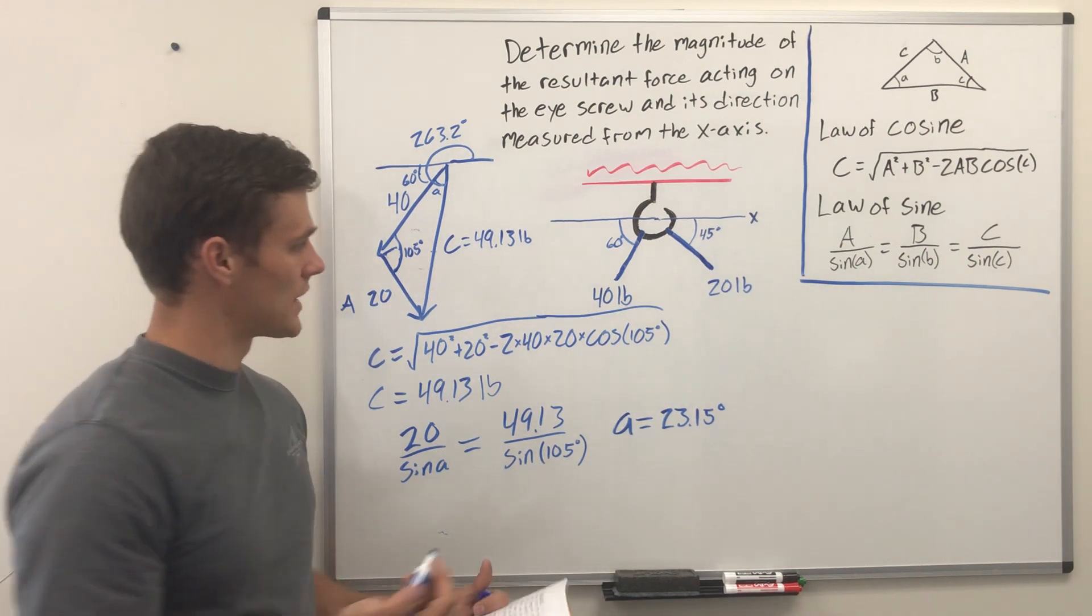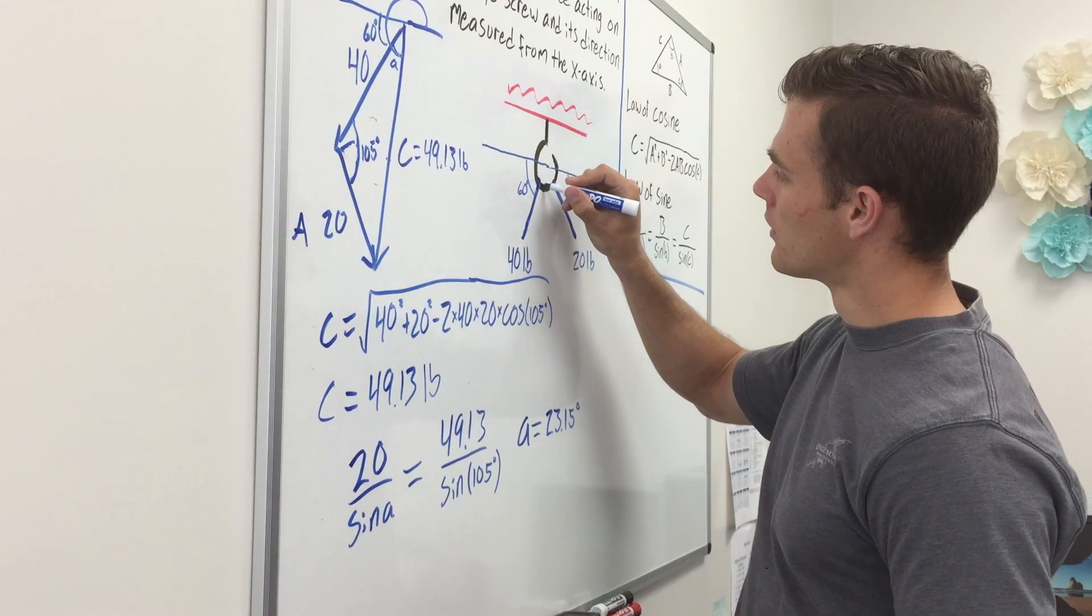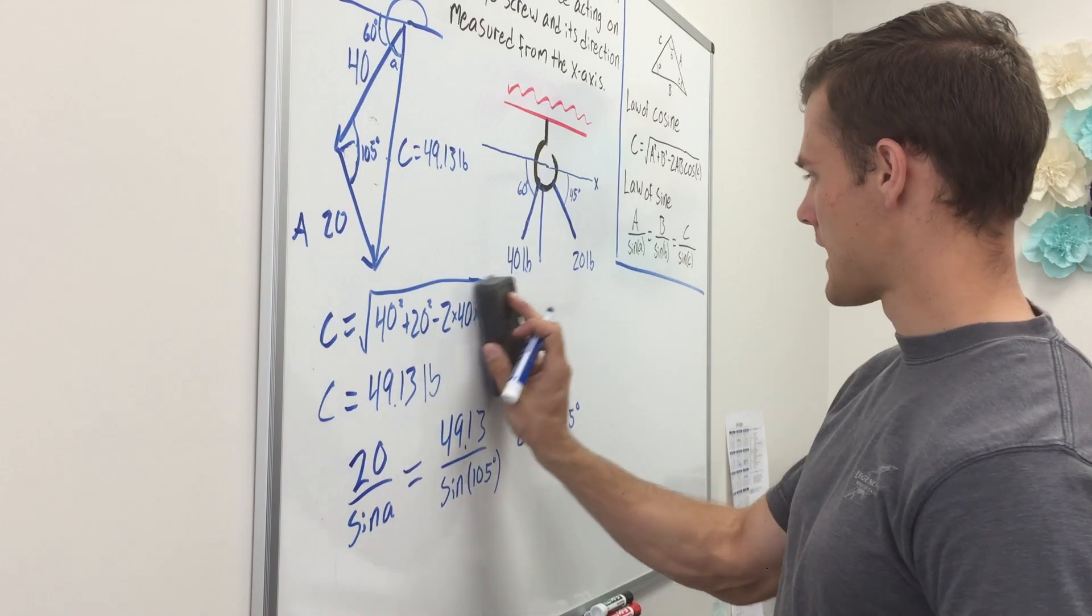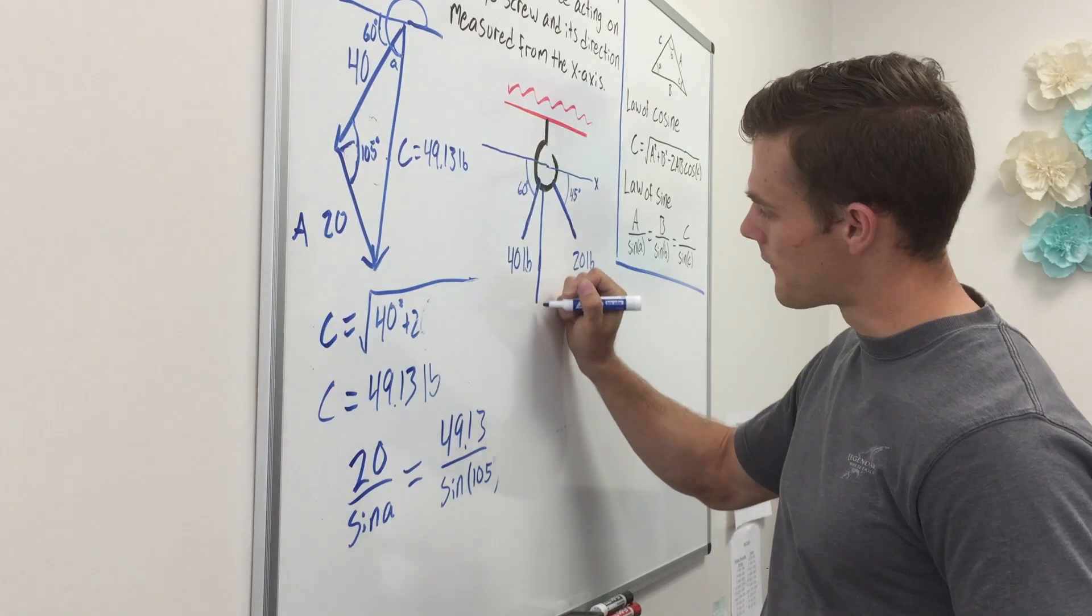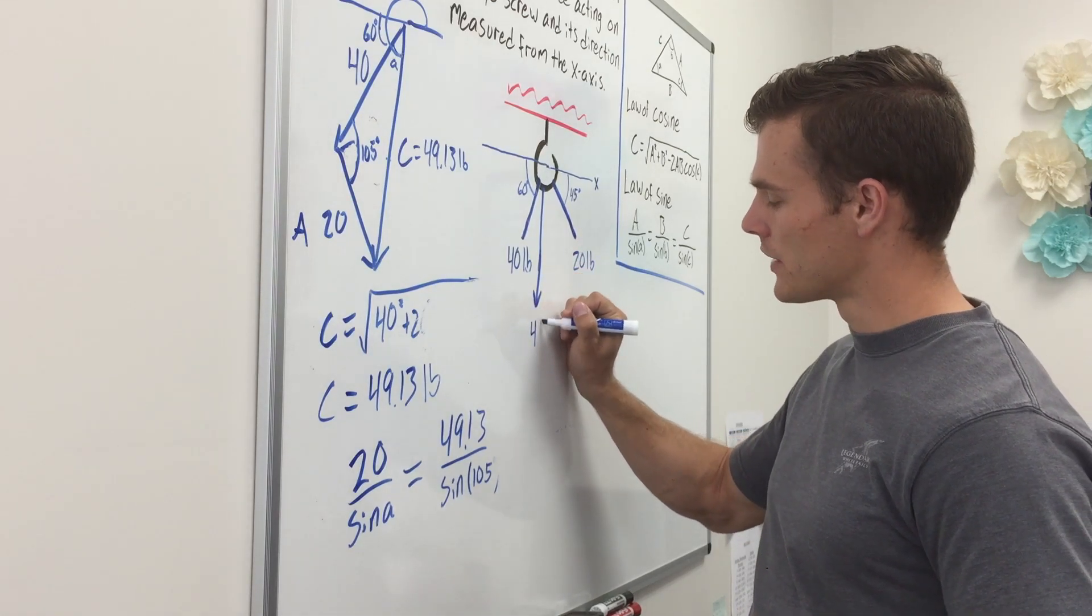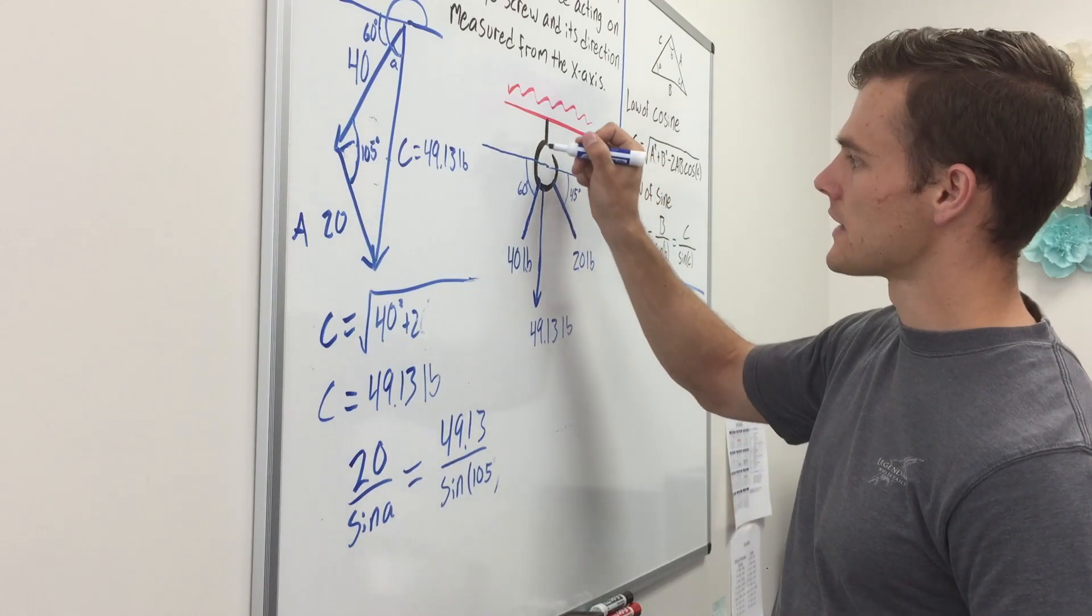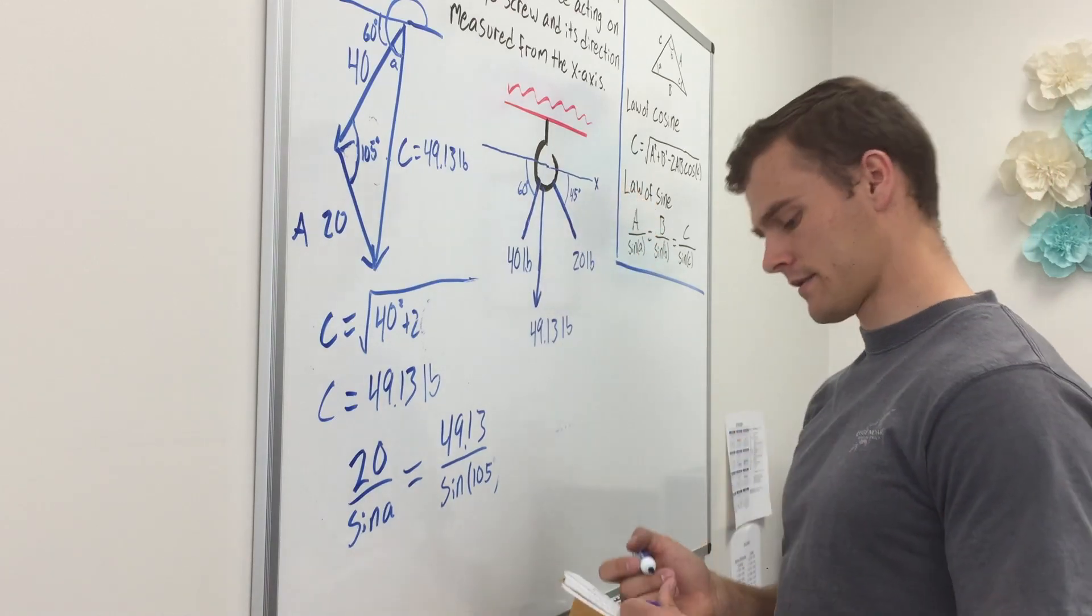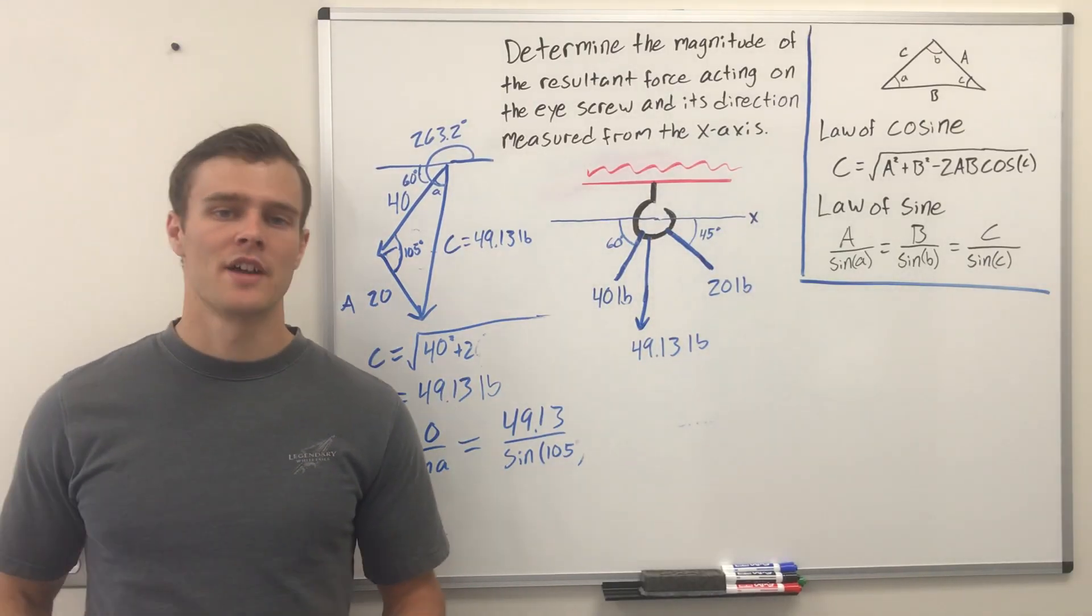That's it. That gives us the direction. If we draw on here, we'll have a force, a resultant force coming off. It's pulling with 49.13 pounds of force. And this angle is 263.15 degrees. That's it, guys.